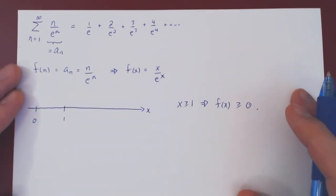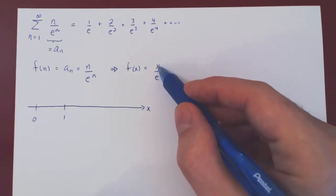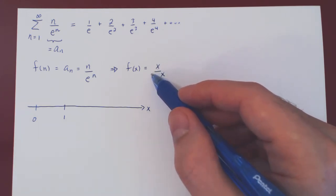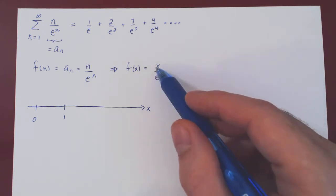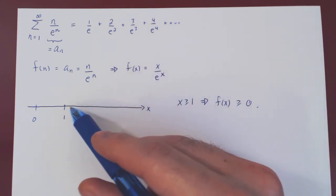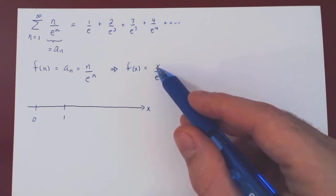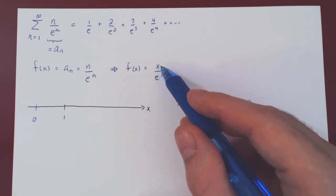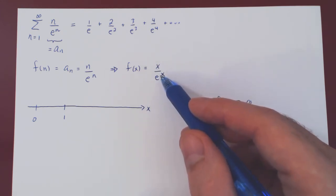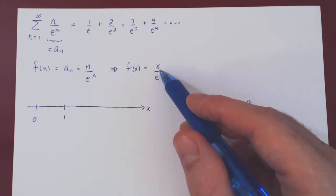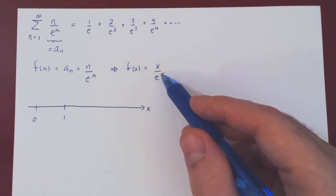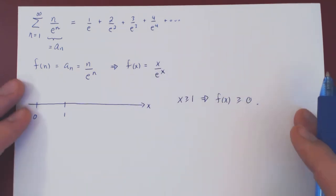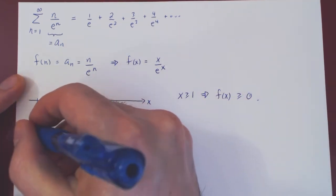What about decreasing? Here it's not obvious. In our previous example, we had 1 over an increasing function, so the result was of course decreasing. But now we have a fraction where the numerator is increasing as x increases, and so is our denominator. We have an increasing function over an increasing function, so it's not clear whether this will be eventually decreasing. We can prove that it is with the derivative, so let's calculate f prime of x.